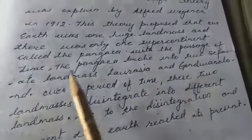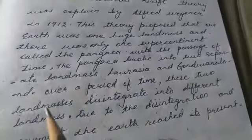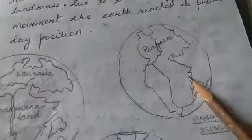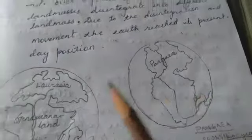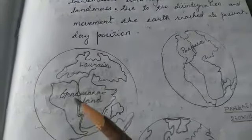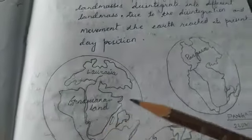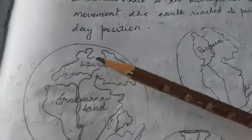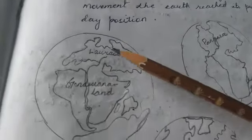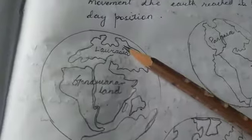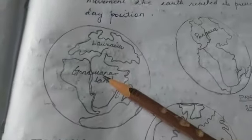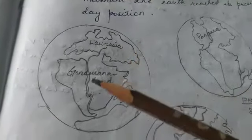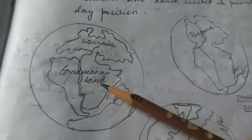With the passage of time, Pangea broke out into two separate landmasses — Laurasia and Gondwana Land. One part of the earth's surface moved towards the pole and one part moved towards the equator. The northern part he called Laurasia and the southern part he called Gondwana Land.